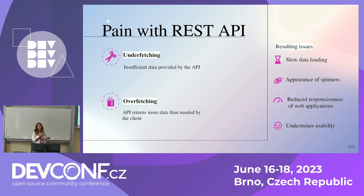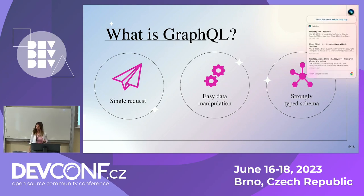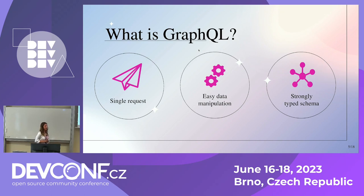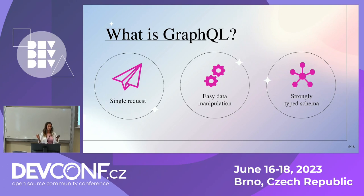So let's try to solve this problem with GraphQL. First, what is GraphQL? GraphQL is an API query language, and it has three main pillars. The first is the single request property — we can get all the data we need in one single request. The second is easy data manipulation — GraphQL supports precise and simple data fetching. The last one is the strongly typed schema, which we can think of as a strict contract between the server and the client.